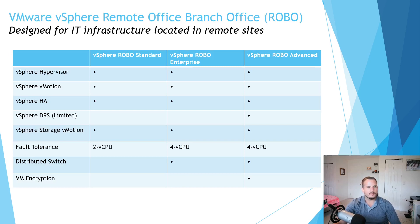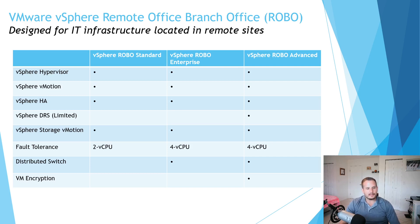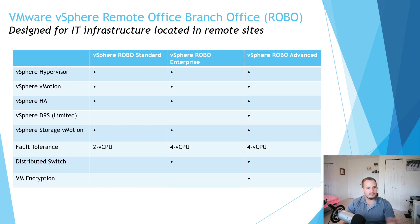You also have VMware vSphere Remote Office Branch Office — you might know it as Robo. This is designed for environments where you have multiple branch offices and want to support VMs in those offices. They're purchased in bundle packs of 25. For example, if you're a credit union with a primary location and branch offices, you might go with Robo because it supports up to 25 virtual machines running in that branch office. There is a maximum of 25 per branch, but you can split that 25 across multiple branches — so you could do 10 here, 10 here, 5 there.